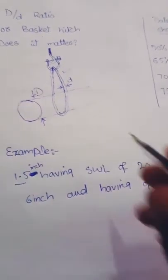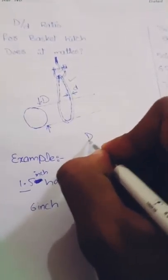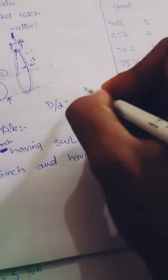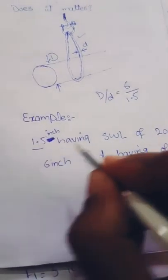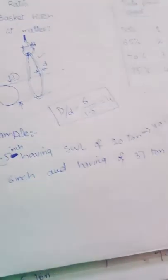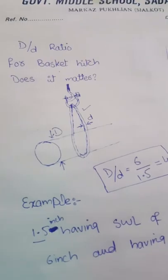Now we will find the D/d ratio for it. D/d is equal to the larger D is 6 and smaller d is 1.5. 6 divided by 1.5, we have an answer about 4. So we have a 4 D/d ratio for this basket hitch.